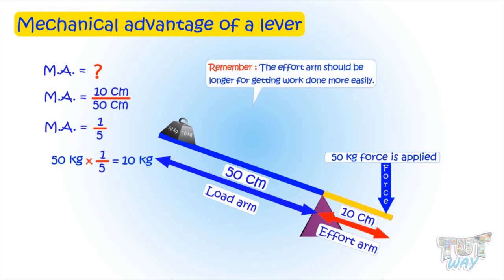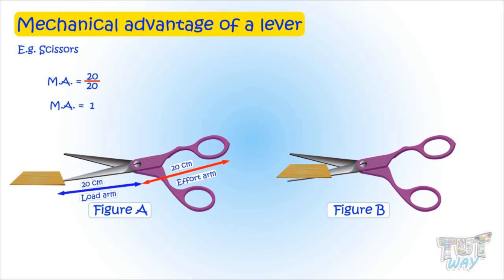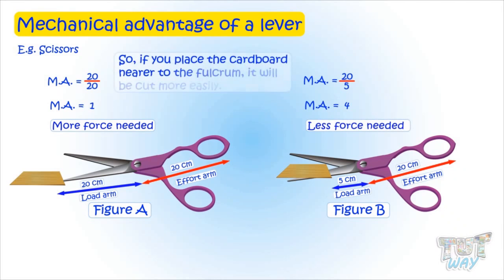Remember, the effort arm should be longer for getting work done more easily. Here we have a scissor. In figure A, the length of the effort arm is 20 centimeters and the load arm is also 20 centimeters, so the mechanical advantage is 1. In figure B, the length of the effort arm is 20 and the load arm is 5, so the mechanical advantage will be 20 divided by 5, which equals 4. The higher the mechanical advantage, the lesser the force required. So if you place the cardboard nearer to the fulcrum, the more easily it will be cut.